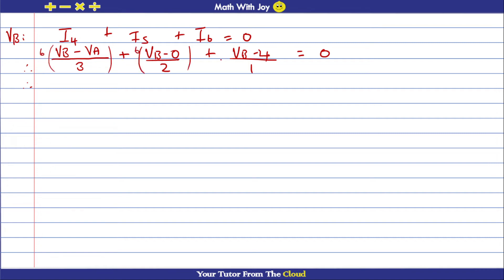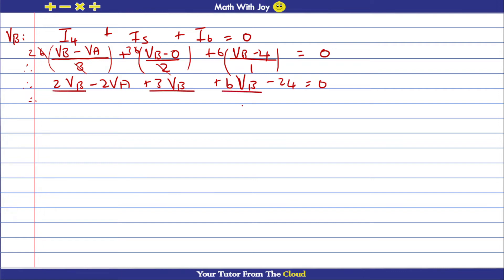Multiplying every term by 6: 6/3 = 2 gives 2VB − 2VA; 6/2 = 3 gives 3VB; 6/1 = 6 gives 6VB − 24. Combining the VB terms: 2 + 3 + 6 = 11. So: 11VB − 2VA = 24, or rearranged: −2VA + 11VB = 24. The two simultaneous equations are: 47VA − 20VB = 60 and −2VA + 11VB = 24.